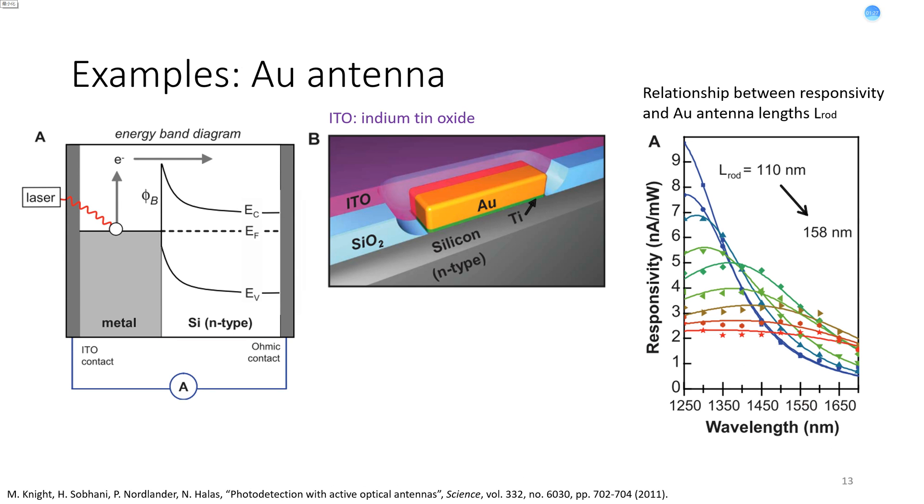Here's an example, one of the earliest works of this type of photodetectors. Gold antenna serves as plasmonic structure. By tuning the length of nano-rods, the responsivity can be changed, as shown in this figure.